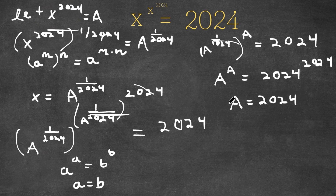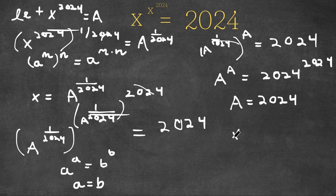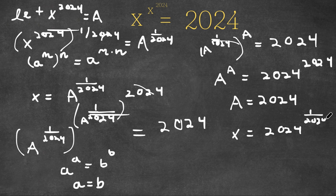And although we have a solution, a is not what we're looking for — we're looking for the value of x. As we know, x is equal to a to the power of 1 over 2024. Because we already have our value for a, x is equal to 2024 to the power of 1 over 2024. So this is our answer.